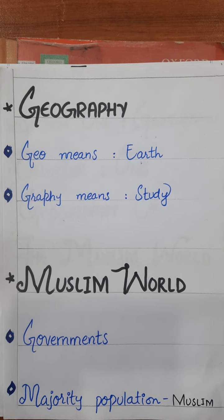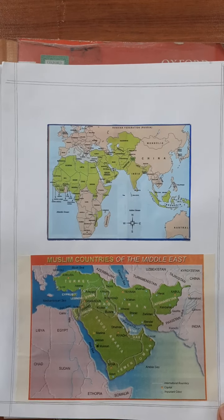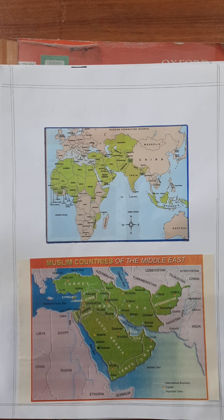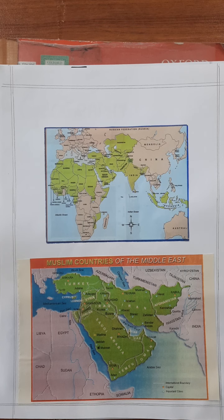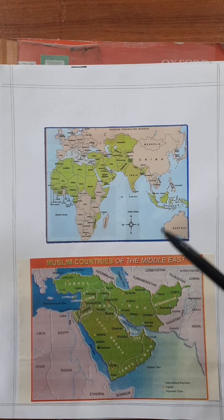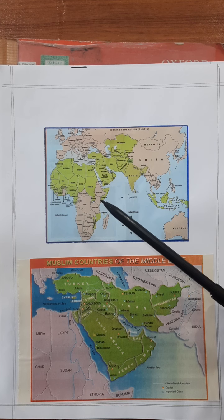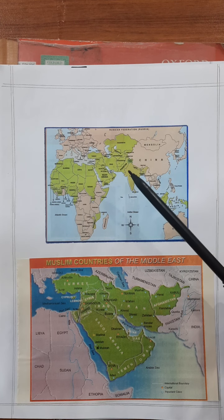Now when we see the world map, there are some areas of the world in which we have Islamic countries and there are some areas in which we have no Islamic country. I'm talking about Islamic countries, not Muslims. Muslims are located in every corner of the world. But at this time I'm talking about the Islamic countries. As in this picture, you can see that the majority of Islamic countries are located in Northern Africa, Southern Asia, and the Middle East.